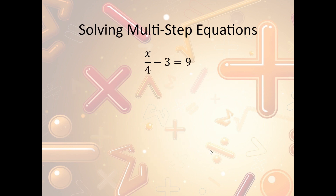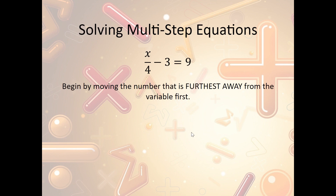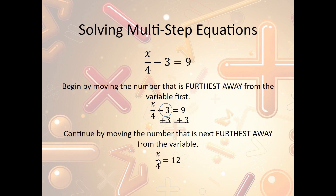Let's look at another example. We have x over 4 minus 3 is equal to 9. We're going to do the same thing — first we need to get x by itself, so we need to get rid of the 3 and the 4. We start by getting rid of whatever's furthest away. The 4 is attached to the x, and the 3 is floating, so we get rid of that first. We add 3 to both sides and get x over 4 is equal to 12. Now the only thing left is the 4, which is dividing x, so we undo that by multiplying both sides by 4. Dividing by 4 and multiplying by 4 cancels out, so x equals 12 times 4, which is 48.